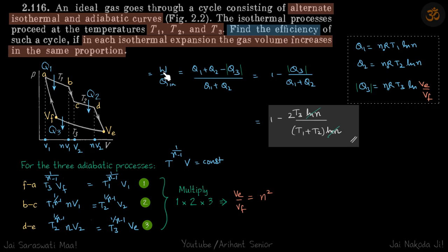Let's start with the definition of efficiency, which is work by Qin. For the adiabatic process, Q is zero. And for the isothermal parts, the work done is positive, so Q1 and Q2 are positive, which means at these two points heat is taken in. So our work is heat taken in minus heat taken out.